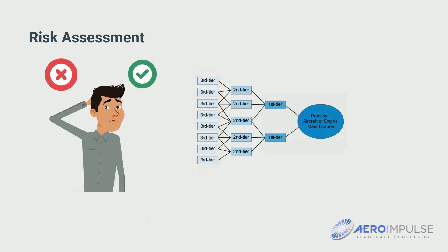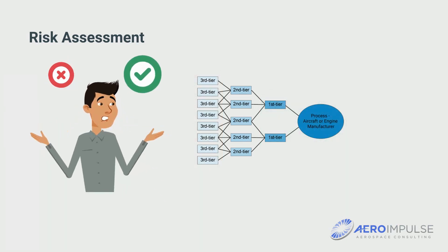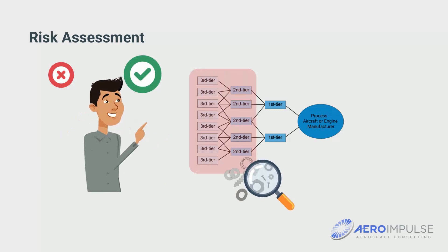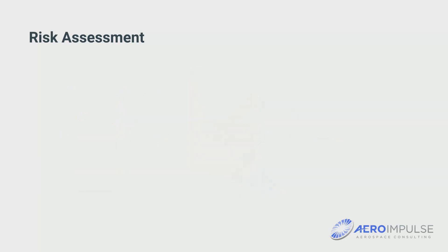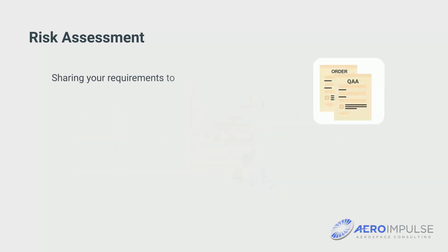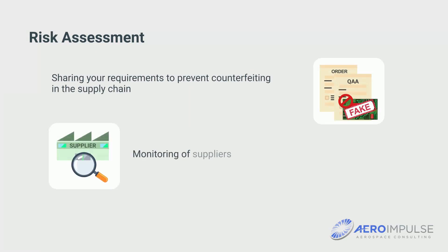If you want to reduce the risk of counterfeiting, you need to focus on strategic purchasing — specifically on sharing your requirements to prevent counterfeiting in the supply chain, and monitoring suppliers so that your requirements are implemented.